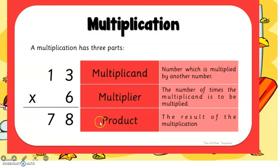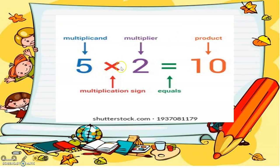So we have 5 times 2 equals 10. Again: 5 is the multiplicand, 2 is the multiplier, this is the multiplication sign, this is the equal sign, and the product is 10. Five times two equals ten.